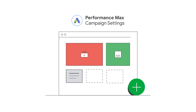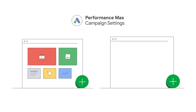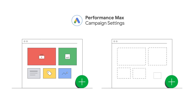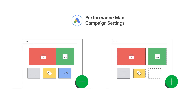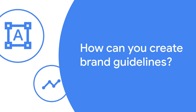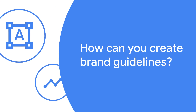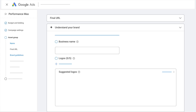Brand guidelines can be accessed from your Performance Max campaign settings. You can also access them after you create a campaign, while you're creating a campaign, while creating another asset group, or while editing an existing asset group.